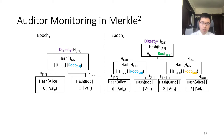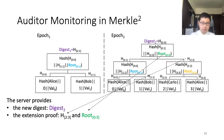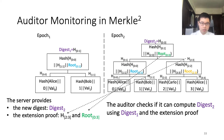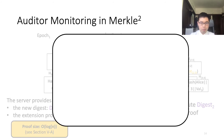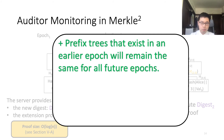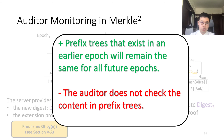Now let me explain the monitoring protocol in Merkle Square. The auditor is responsible for monitoring digest transitions. Whenever the server provides a new digest, it also provides an extension proof, which allows the auditor to compute the new digest using the old digest and the extension proof. Only if the auditors can recompute this new digest will they accept the digest transition. This extension proof can be proven to have size O(log n). The benefit of this auditor monitoring is that it preserves the append-only property of the prefix trees, meaning prefix trees that exist in an earlier epoch remain the same for all future epochs. However, the auditor does not actually check the content in the prefix trees, which may allow an attacker to add malicious content.